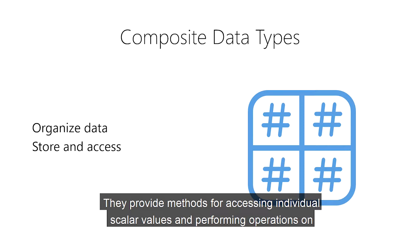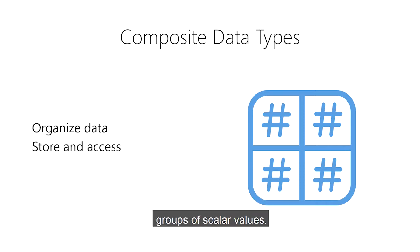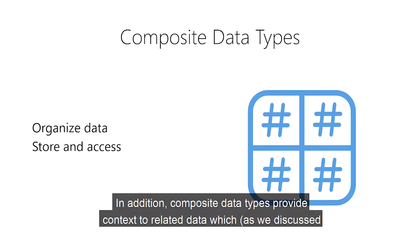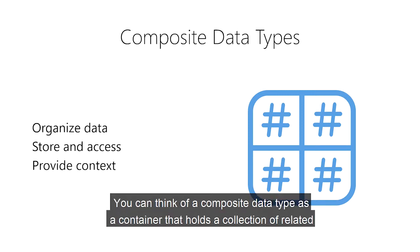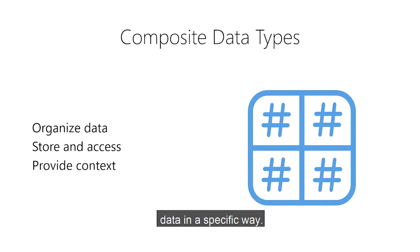They provide methods for accessing individual scalar values and performing operations on groups of scalar values. In addition, composite data types provide context to related data, which, as we discussed previously, is used to create information. You can think of a composite data type as a container that holds a collection of related data in a specific way.